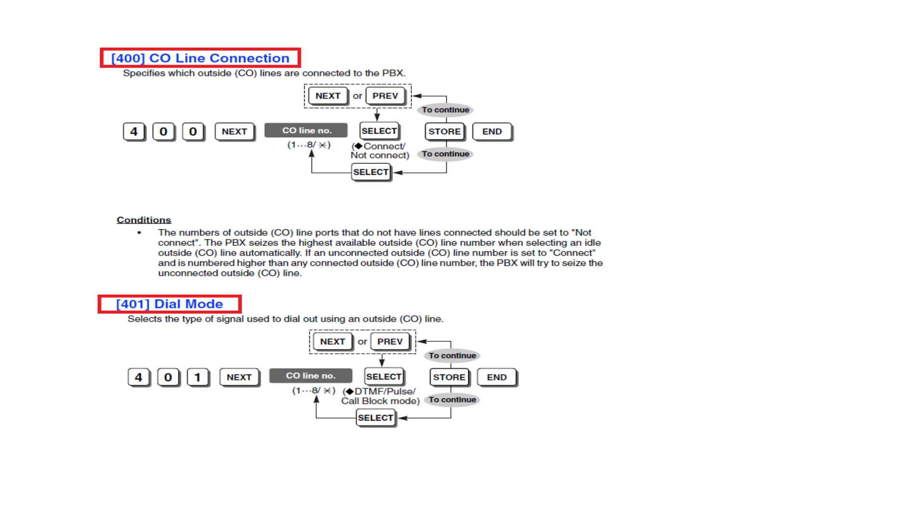You can select the CO line connected or not connected by using auto answer key and store it by using auto dial. If you have connected only one CO line then in program CO1 make it as connect and rest CO from 2 to 7 make it as not connected. Don't forget to store after each program finished. Similarly you can do the program number 401 to select dial mode. Normally connected CO line we can make it DTMF dial mode and save it.